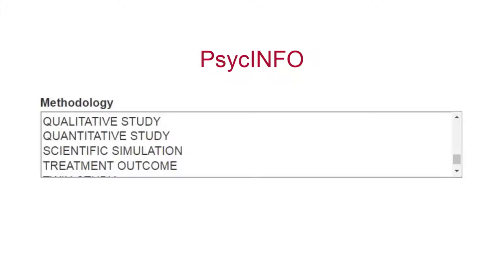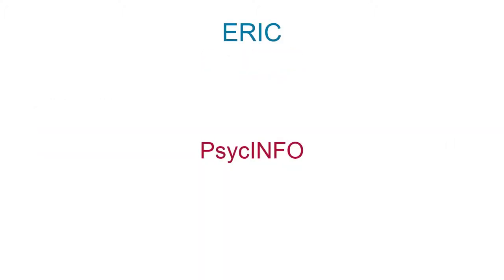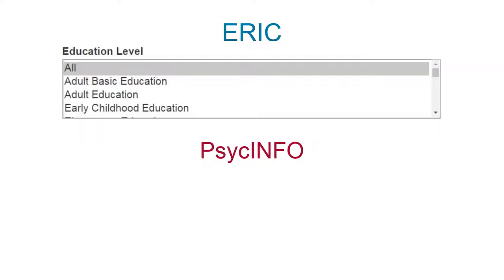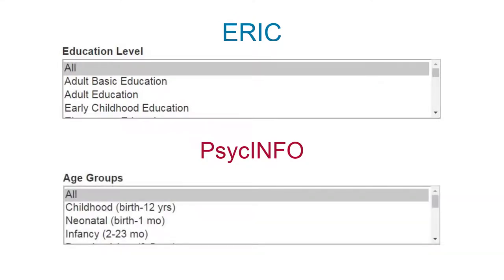PsychInfo will also allow you to limit your results by research methodology, like quantitative or qualitative, but ERIC does not. ERIC and PsychInfo have additional differences in limiters or filters. For example, on ERIC you can limit by education level, while on PsychInfo you can limit by age group, which is categorized according to developmental age.